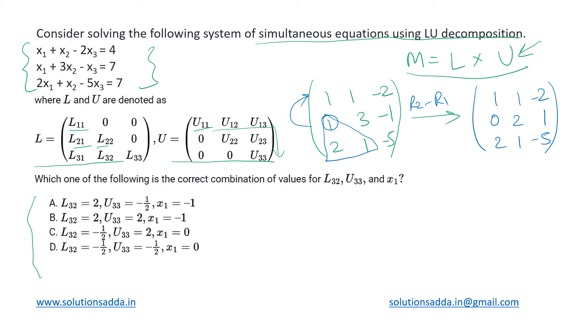Okay now this is done, this 2 has to be made 0 now. For that we can do something like R3 minus 2R1. That gives us 1, 1, -2; 0, 2, 1; and 0, -1, -1.